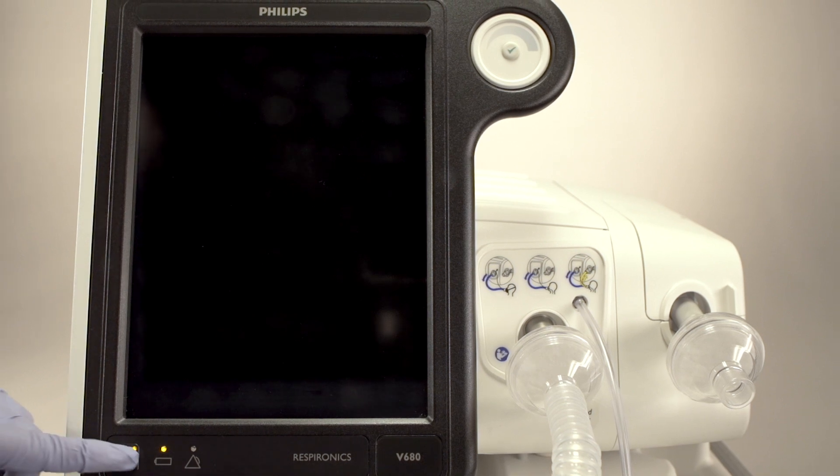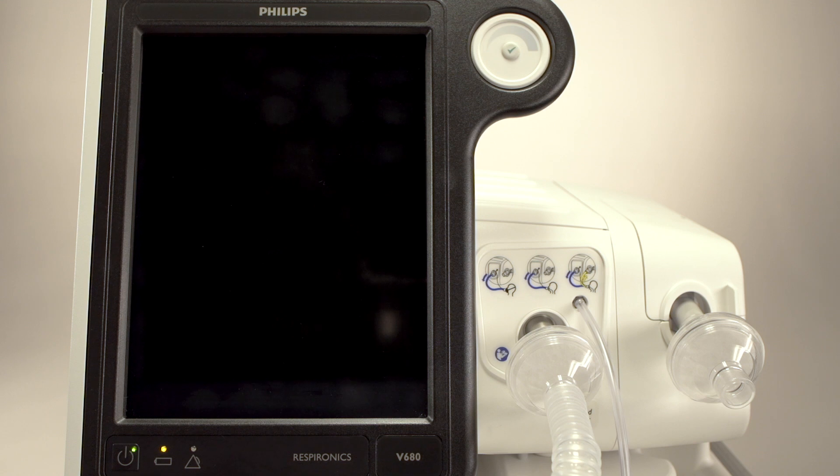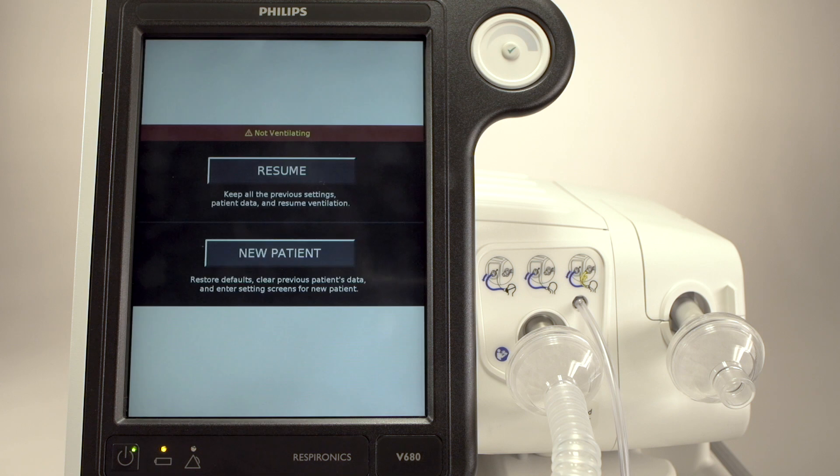Now we will power up the unit. Touch the Power button. V680 first enters into a Power On self-test to check functionality in alarms. Note that the audible alarm gets progressively louder.